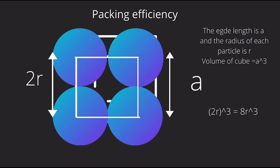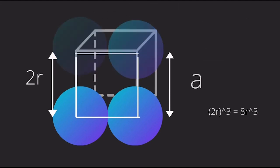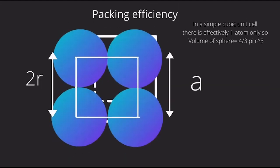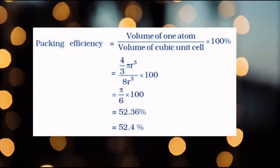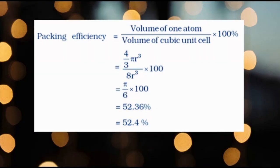Packing efficiency. The edge length is A and the radius of each particle is R. Therefore, the volume of cube is A³ which is 8R³. In a simple cubic unit cell, there is effectively one atom. So, volume of sphere is (4/3)πr³. Packing efficiency is volume of 1 atom / volume of the cubic unit cell × 100%. After calculation, it comes out to be 52.4%.